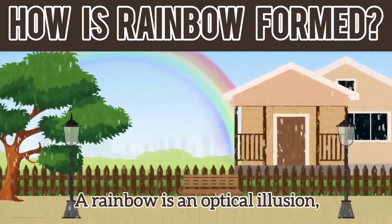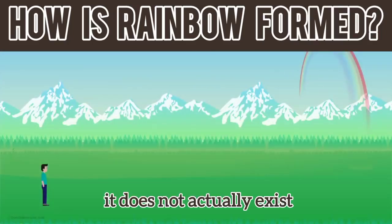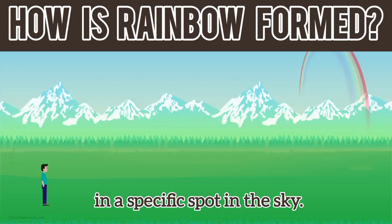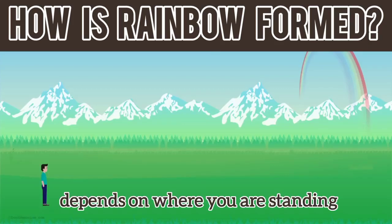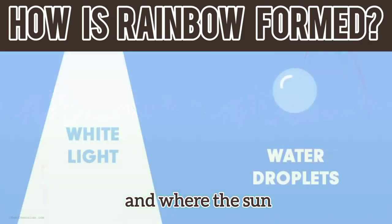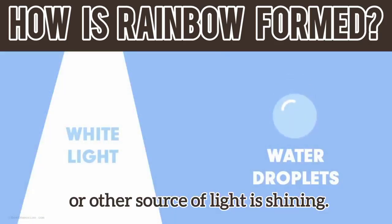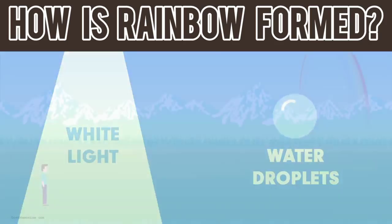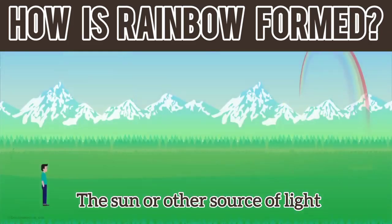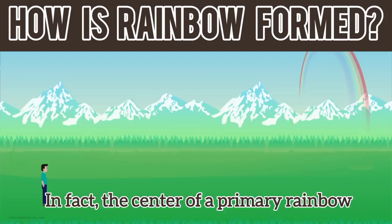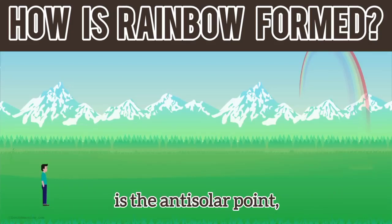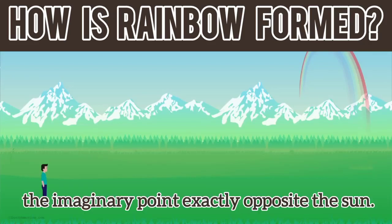A rainbow is an optical illusion. It does not actually exist in a specific spot in the sky. The appearance of a rainbow depends on where you are standing and where the sun or other source of light is shining. The sun or other source of light is usually behind the person seeing the rainbow. In fact, the center of a primary rainbow is the antisolar point, the imaginary point exactly opposite the sun.